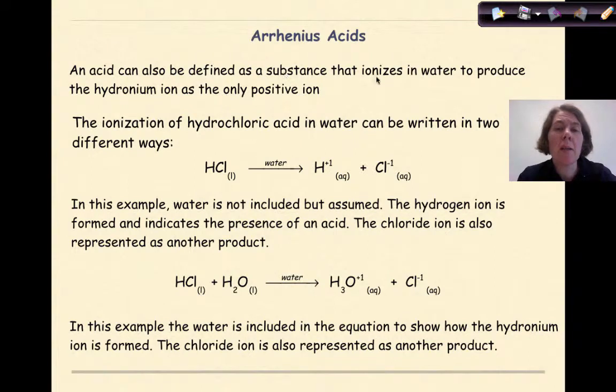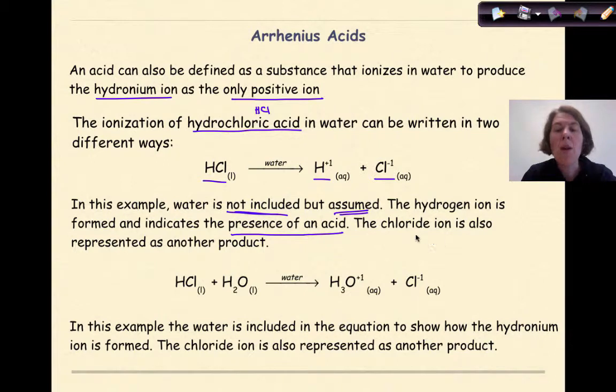An acid can also be defined as a substance that ionizes in water to produce the hydronium ion as the only positive ion. The ionization of hydrochloric acid, HCl, in water can be written in two different ways. We can have HCl liquid, we put that in water, and we can have hydrogen ions and chloride ions. In this example, water is not included but assumed. The hydrogen ion is formed and indicates the presence of an acid.